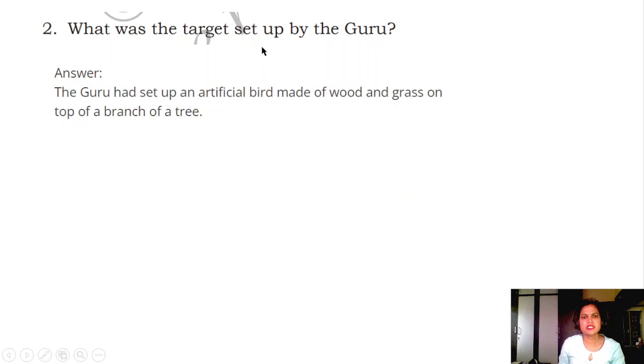Question 2: What was the target set up by the Guru? Answer: Guru had set up an artificial bird made of wood and grass on top of the branch of a tree.